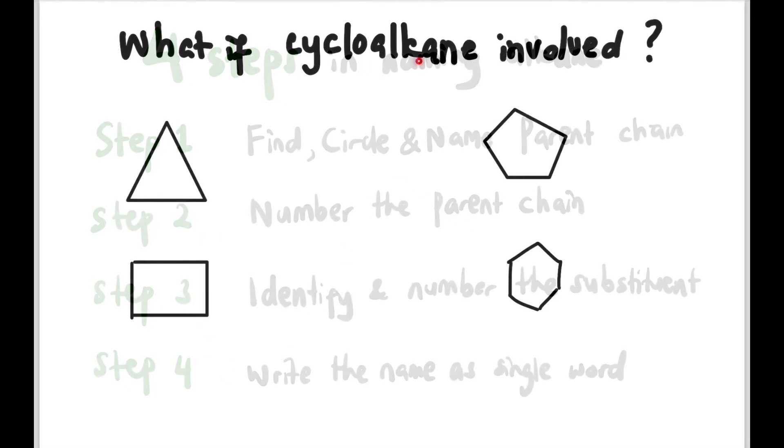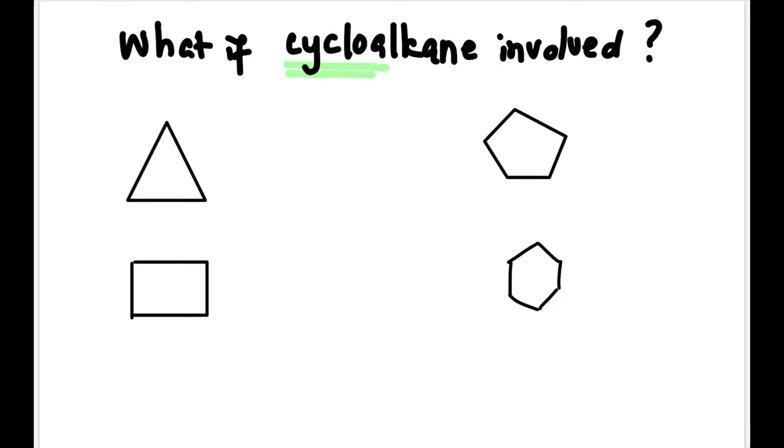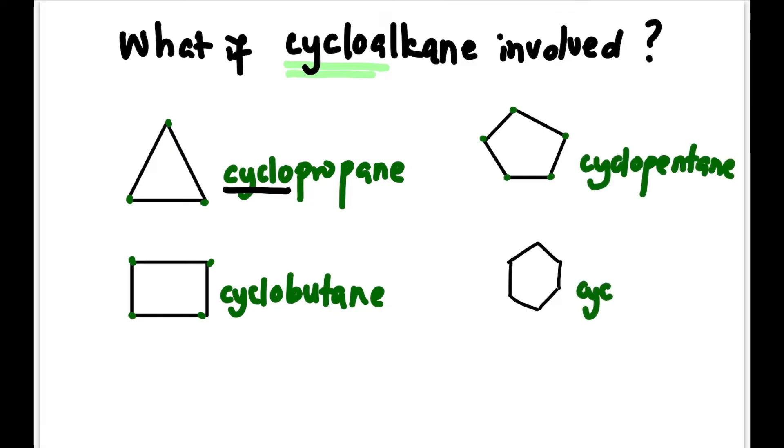But what if cycloalkane is involved? Basically you just have to add the word cyclo. For example, if there are three carbons it's cyclopropane. If there are four carbons, cyclobutane. If five, cyclopentane. And if there are six, cyclohexane.